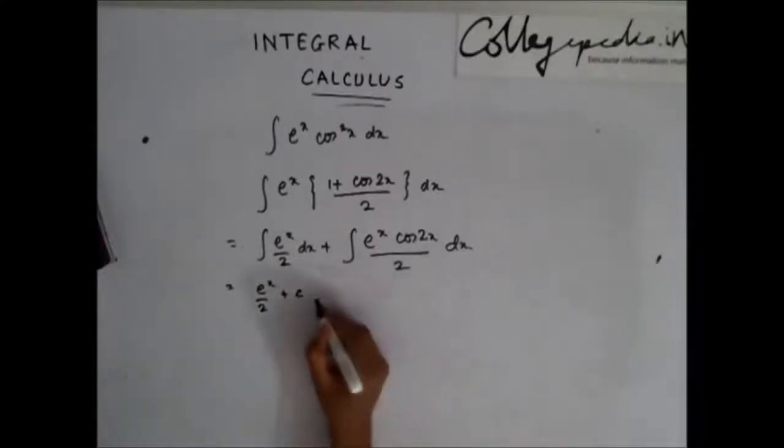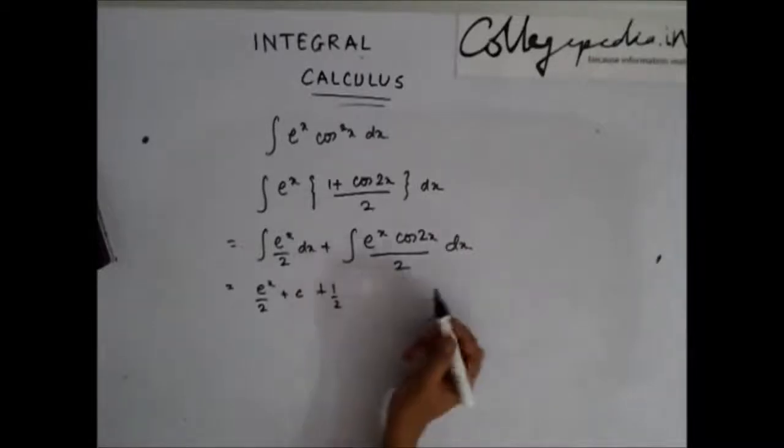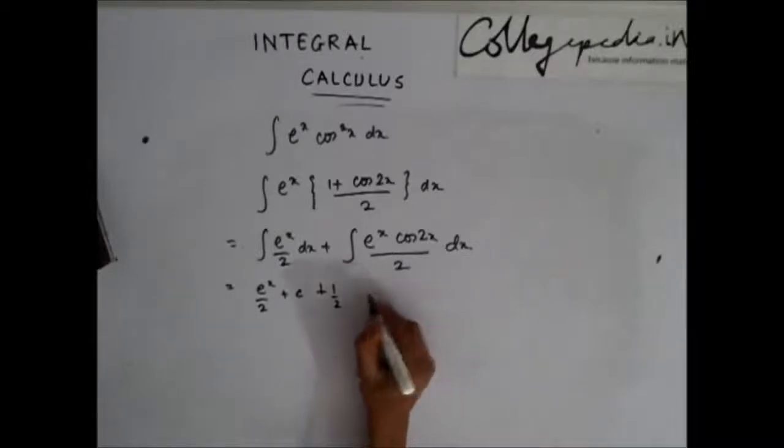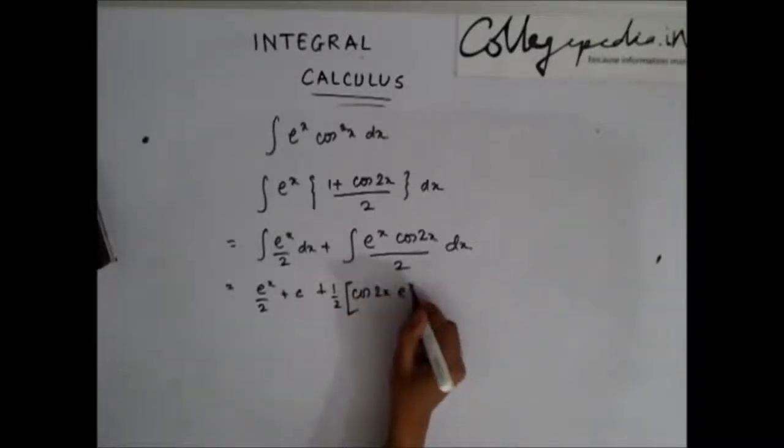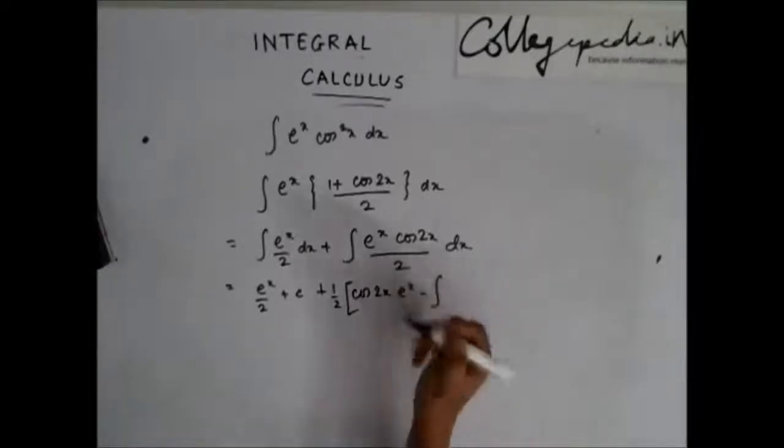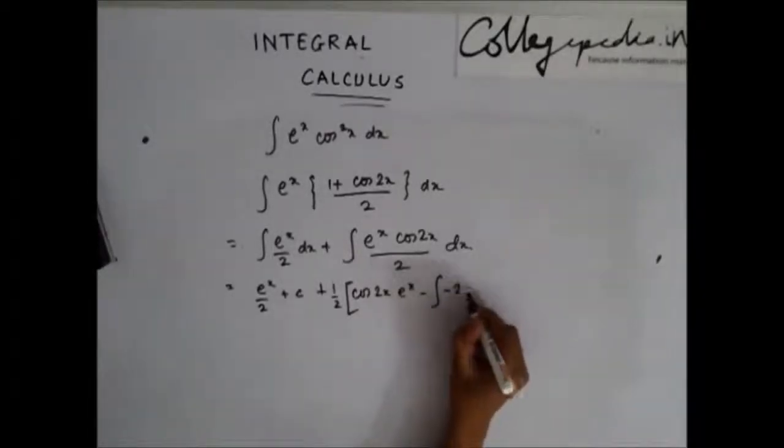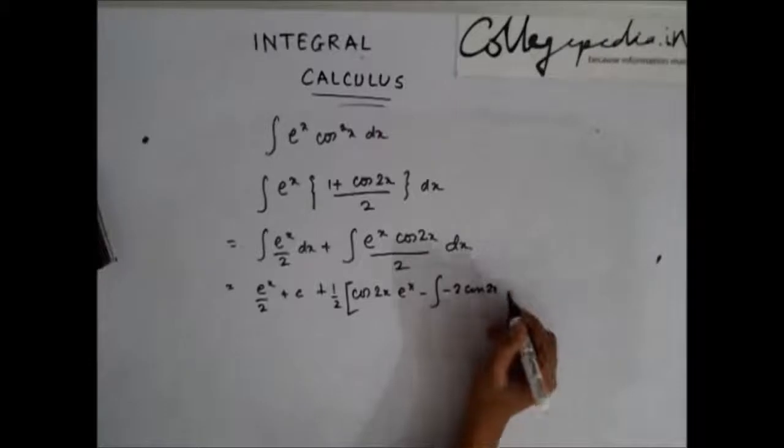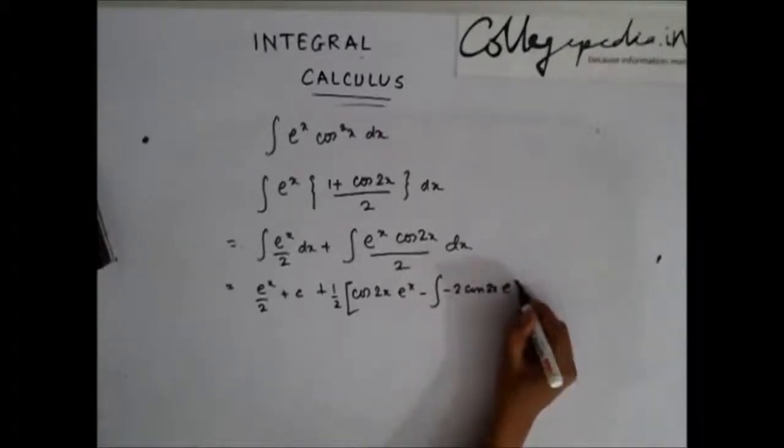Now to solve this, which one should I take as the first function? I will take cos 2x as my first function. So the differentiation of cos 2x is minus 2 sin 2x, and here I will get e to the power x dx.